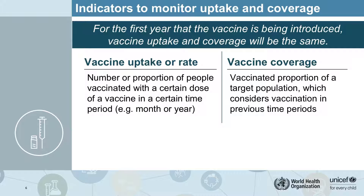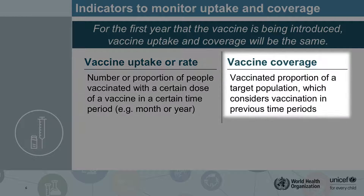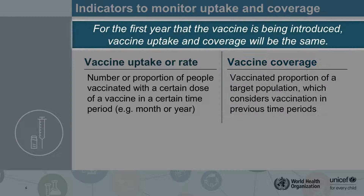A quick note on the difference between vaccine uptake versus coverage. We will use the term vaccine uptake, or vaccination rate, as the number or proportion of people who are vaccinated with a certain dose in a certain time period — for example, 10% of the total population was vaccinated in a given year. Vaccine coverage is a different concept that measures the vaccinated proportion of a target population, whether this happened in the current period or previous periods. So for 2021, we can use the two terms interchangeably as we are just starting to vaccinate people and don't really have to worry about what happened before.